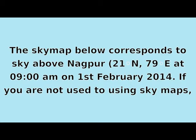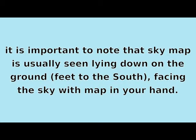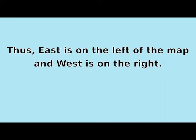If you are not used to using sky maps, you should know that the sky map is usually seen lying down on the ground with feet to the south, facing the sky with the map in your hand. Thus, east is on the left of the map and west is on the right.